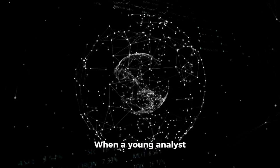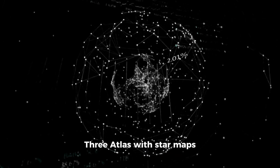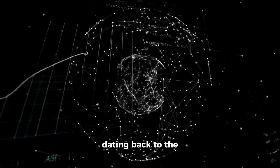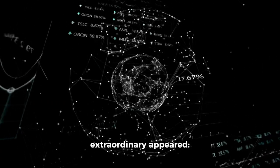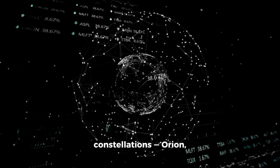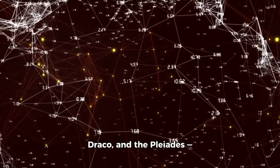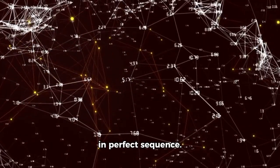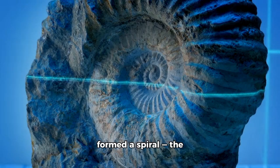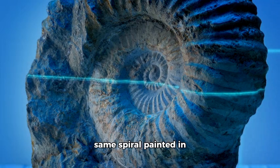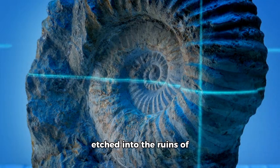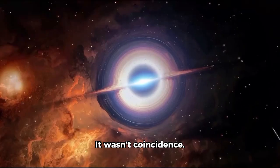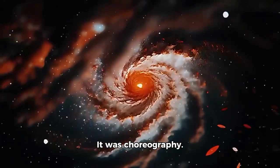When a young analyst overlaid the trajectory of three atlas with star maps dating back to the Babylonian era, something extraordinary appeared. Its path crossed sacred constellations, Orion, Draco, and the Pleiades in perfect sequence. Those intersections formed a spiral, the same spiral painted in caves, carved into bones, etched into the ruins of lost civilizations. It wasn't coincidence. It was choreography.